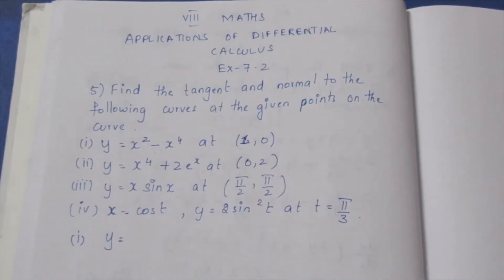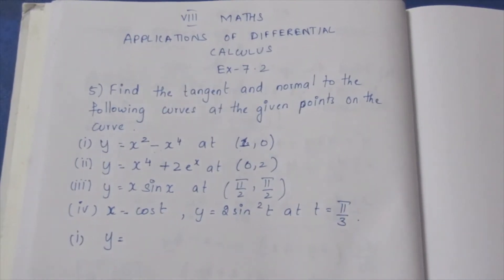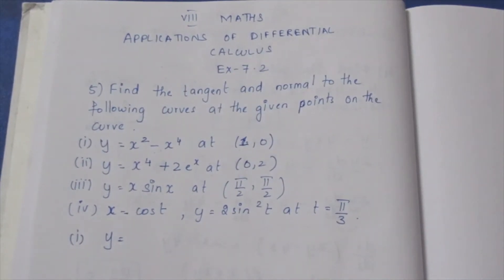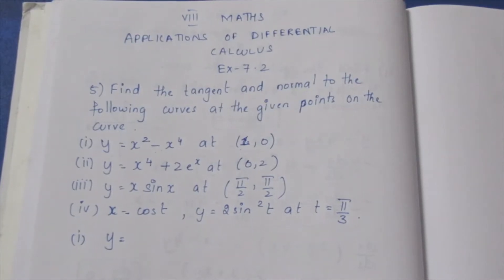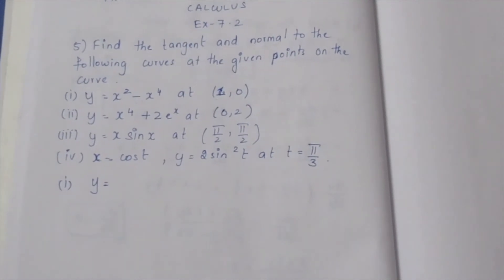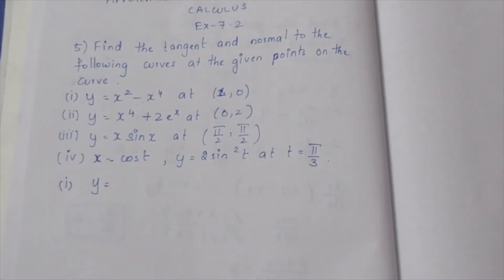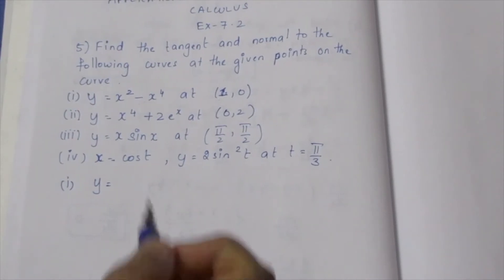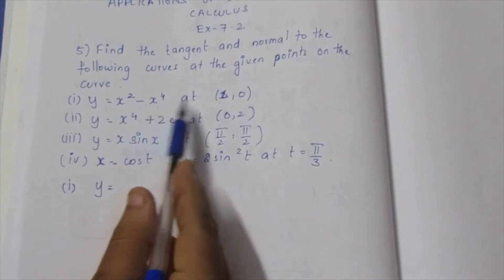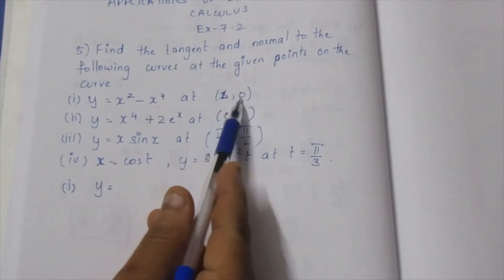Hello viewers, I am Ithli. This is the 8th Math Applications of Differential Calculus, Exercise 7.2. Let's see the 5th sum in the video: Find the tangent and the normal to the following curves at the given point on the curve. So if you have an equation of a curve, you have a point where the tangent touches.